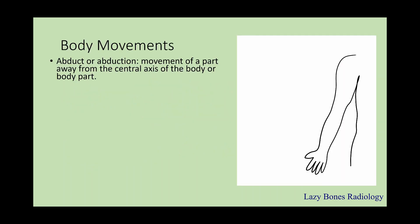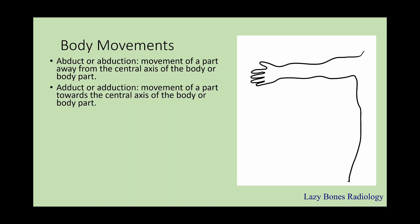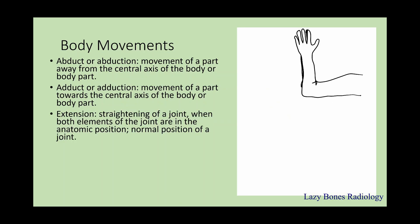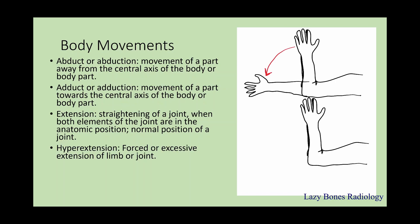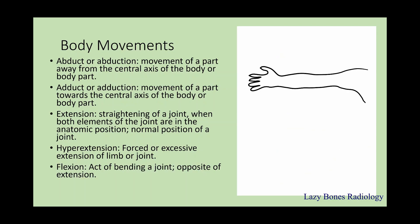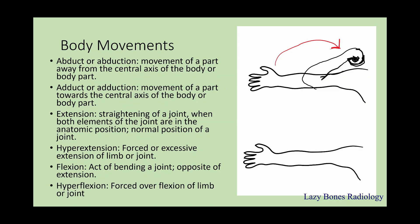Body movements. Abduction is the movement of a part away from the central axis of the body or body part — as you can see here, the arm is moving away from the body. Adduction is the movement of a part towards the central axis of the body, so as your arm moves towards the body. Extension is the straightening of a joint when both elements of a joint are in anatomical or normal position. Hyperextension is a forced and excessive extension of a limb or joint — an overextension. Flexion is the act of bending a joint or the opposite of extension. Hyperflexion is a forced or overflexion of the limb.